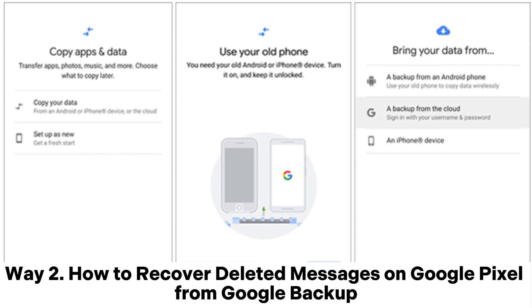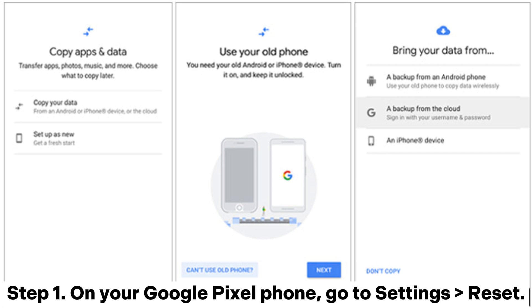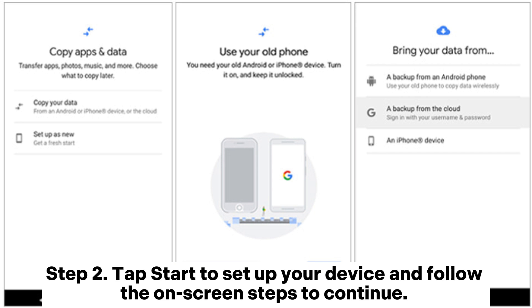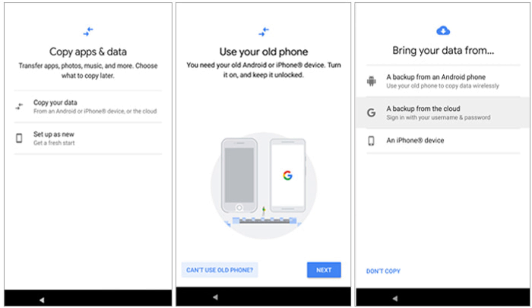Way 2: How to recover deleted messages on Google Pixel from Google Backup. Step 1: On your Google Pixel phone, go to Settings, then Reset. Step 2: Tap Start to set up your device and follow the on-screen steps to continue.